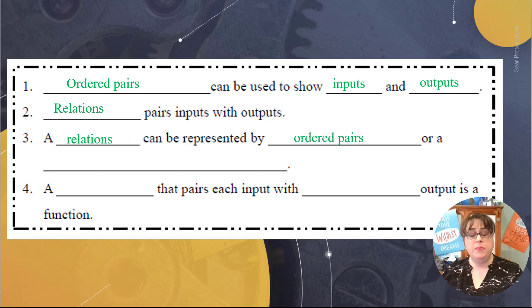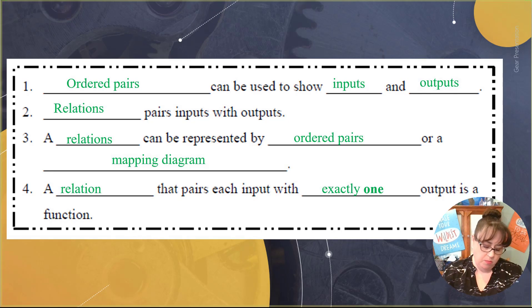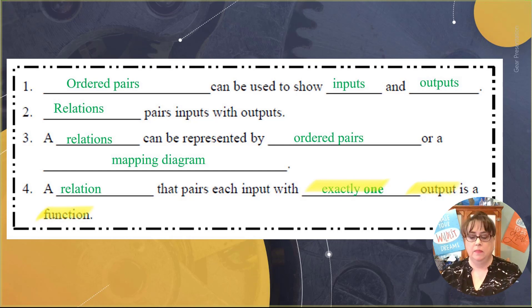Relations can be represented either with ordered pairs or with mapping diagrams. And a relation that pairs each input with exactly one output is called a function. And that right there is probably the most important thing that you need to remember today and for this entire chapter, is that this exactly one output is a function. So make sure that you take some time to draw attention to that in your notes.